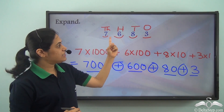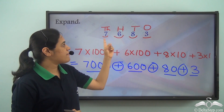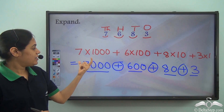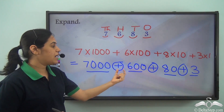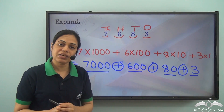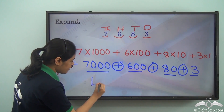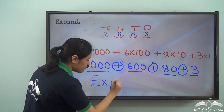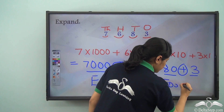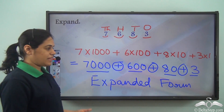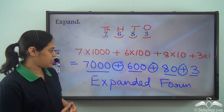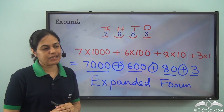So for the number 7683, or seven thousand six hundred eighty three, the expanded form is seven thousand plus six hundred plus eighty plus three. And this is how you can expand any given four digit number — write the place values and add them.